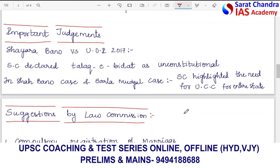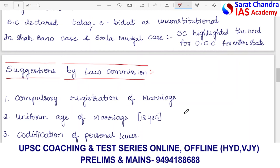For the way forward, the Law Commission suggests: compulsory registration of marriage, a uniform age of marriage — for example, today the minimum marriage age is different for men and women — and codification of personal laws. These are the suggestions that can be written as the way forward.